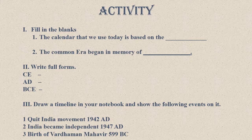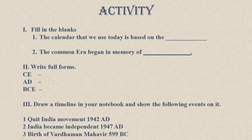Third question is an activity to do in your notebook: Draw a timeline and show the following events on it — the Quit India Movement in 1942 AD, India becoming independent in 1947 AD, and the birth of Vardaman Mahavir in 599 BC.